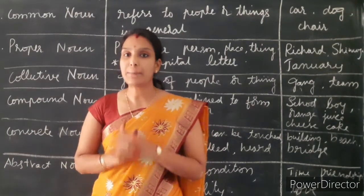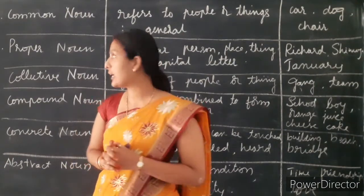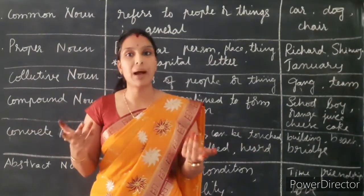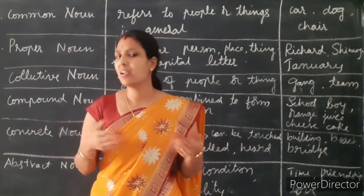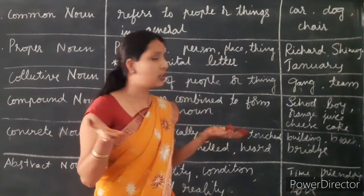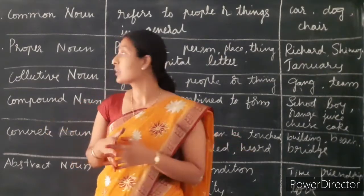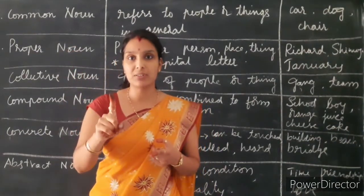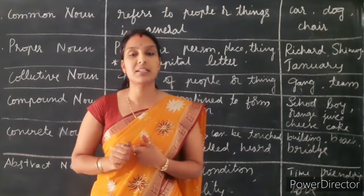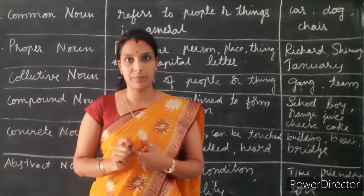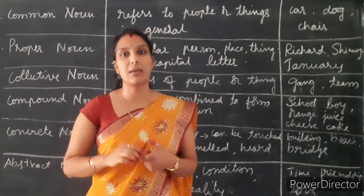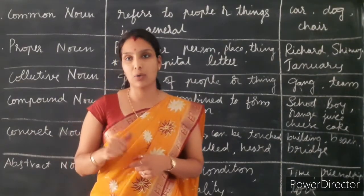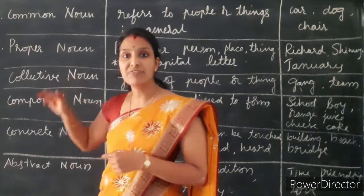Hope it is very clear to you. Let me revise all the nouns once again. Common noun — which is in common, can belong to anybody: anybody's car, dog, chair. Proper noun — proper noun is for only one person, must always be written with a capital letter, and must be a person's name or place name in particular. Those are called proper noun.